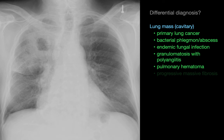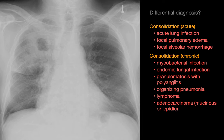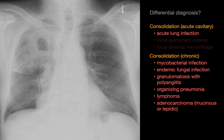Pulmonary hematomas can exhibit apparent cavitation when there's a pulmonary laceration associated with them. The differential diagnosis for non-diffuse consolidation, acute or chronic, is extensive. Of these items, pulmonary edema and alveolar hemorrhage won't cavitate, and it's also unlikely that organizing pneumonia, pulmonary lymphoma, and mucinous or lepidic adenocarcinomas will cavitate either.